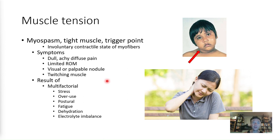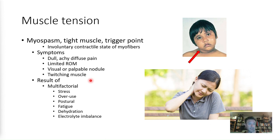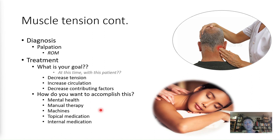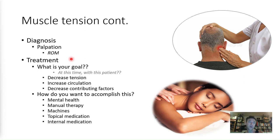How do you get muscle tension? It's multifactorial. Stress is probably the most common cause — either psychosocial or postural. Sitting at a desk all day, looking at a computer monitor, driving — or psychosocial stress causing shoulders to come up and tension to develop around the neck. Posture, fatigue, dehydration, electrolyte imbalance, post-injury, post-traumatic — there are many contributors. Diagnosis is simple: you palpate it. If it feels tight, it's tight. Range of motion can be a secondary diagnostic tool.